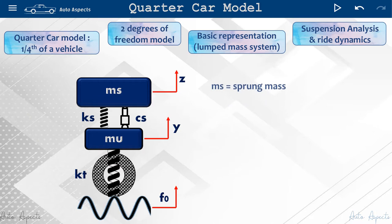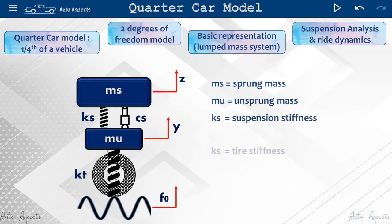Where MS represents sprung mass, MU represents unsprung mass. KS and KT corresponds to suspension stiffness and tire stiffness, while CS is the suspension damping.